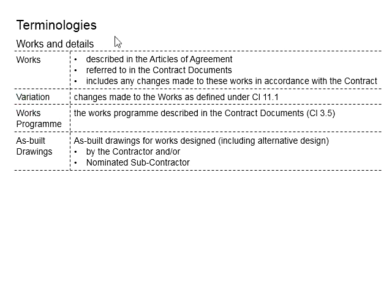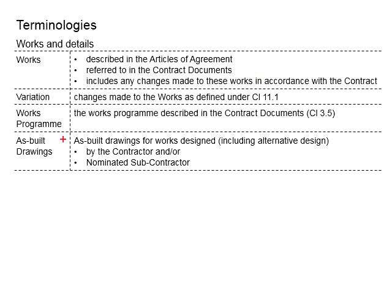As for variations, it is basically a change made to the work as defined in Clause 11.1. The work program will be the outline of the work as described in the contract document under Clause 3.5. Lastly, the as-built drawings — we have technical drawings which normally appear at the planning stage showing how the building or structures are intended to be constructed. Then construction works commence, and during construction there could be some changes made due to circumstances or considerations. Once the project is completed, the contractor will need to provide drawings showing the details of what has already been built.